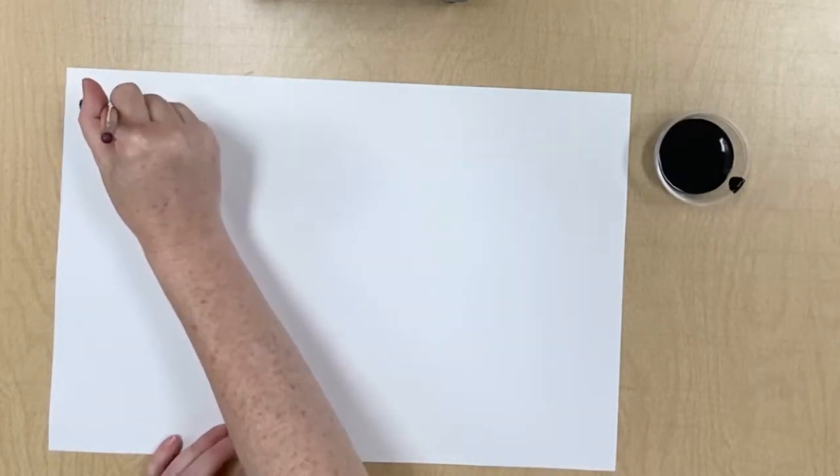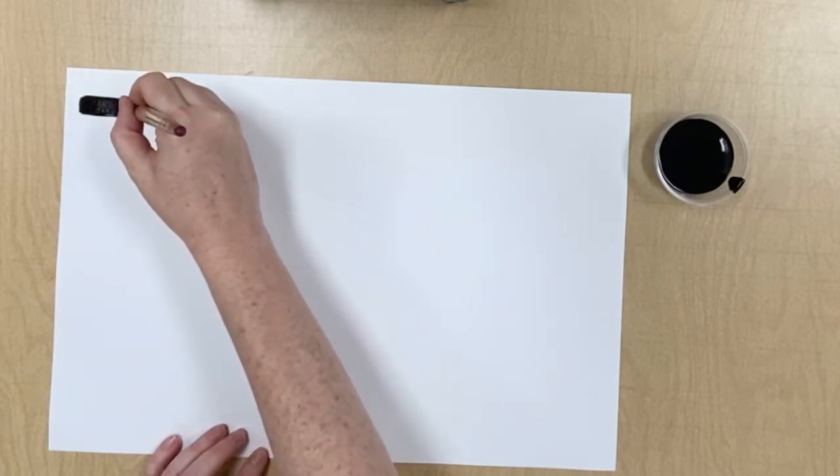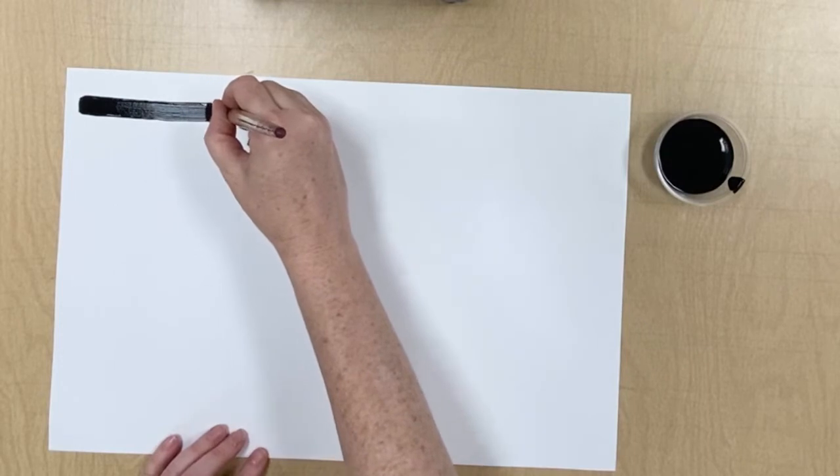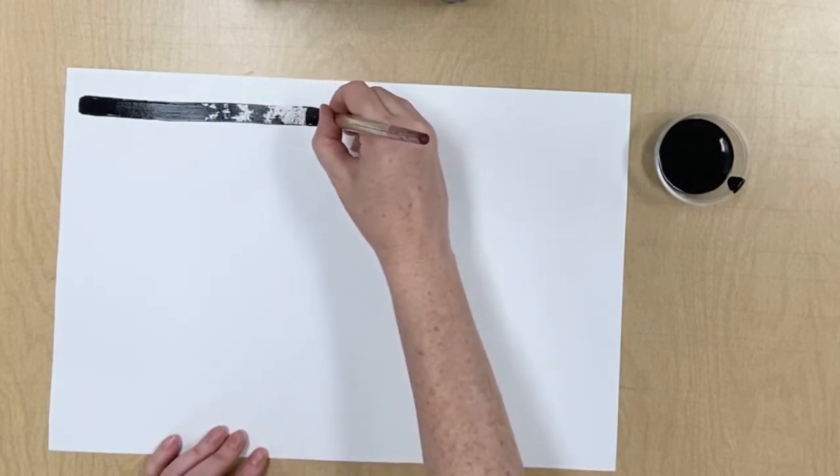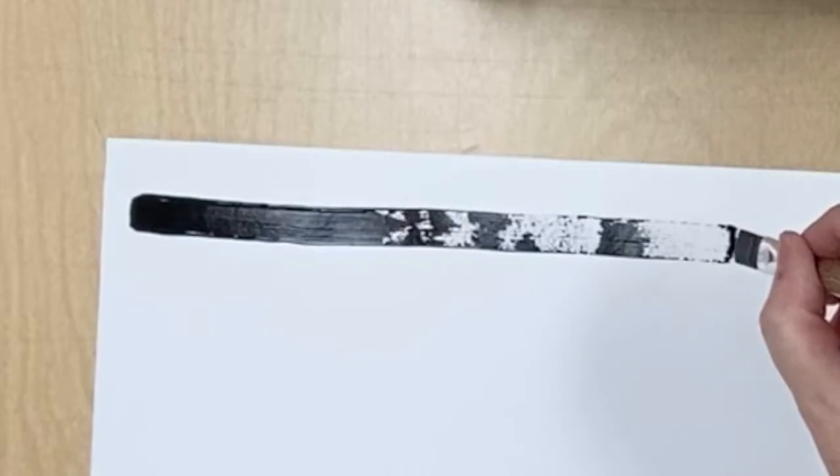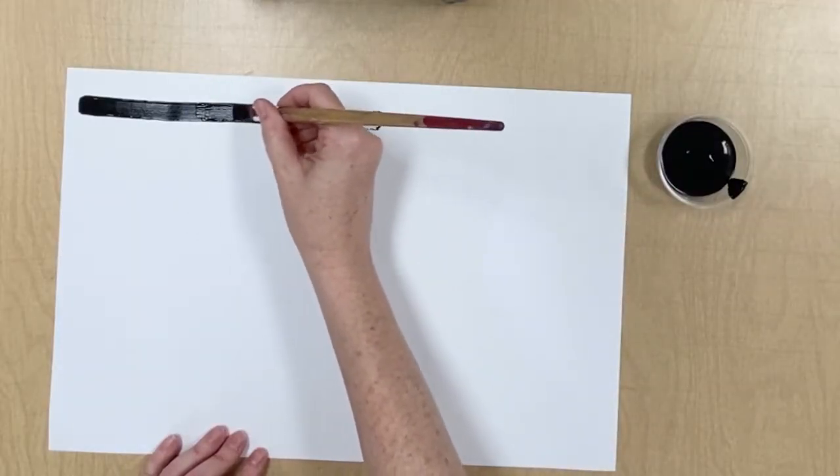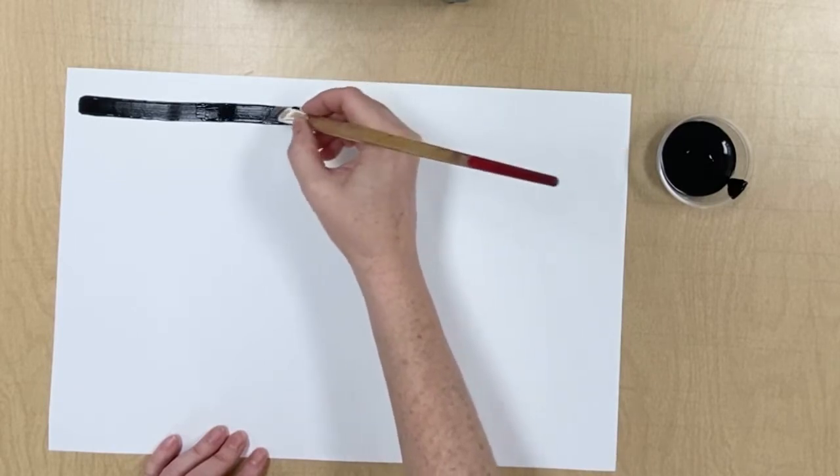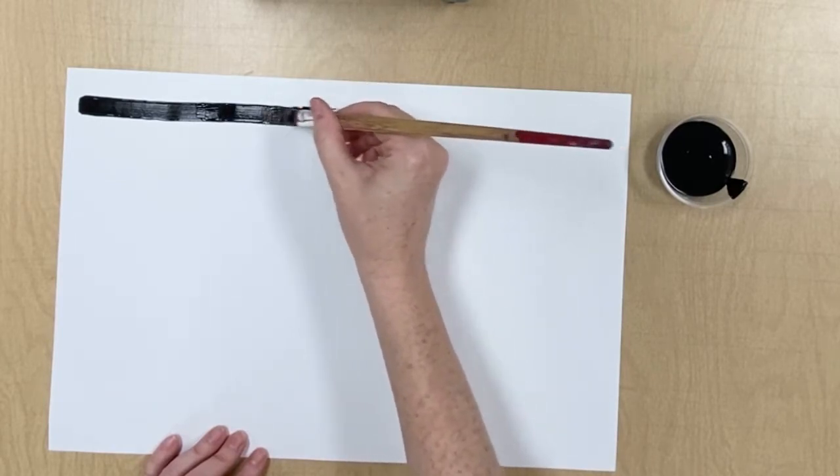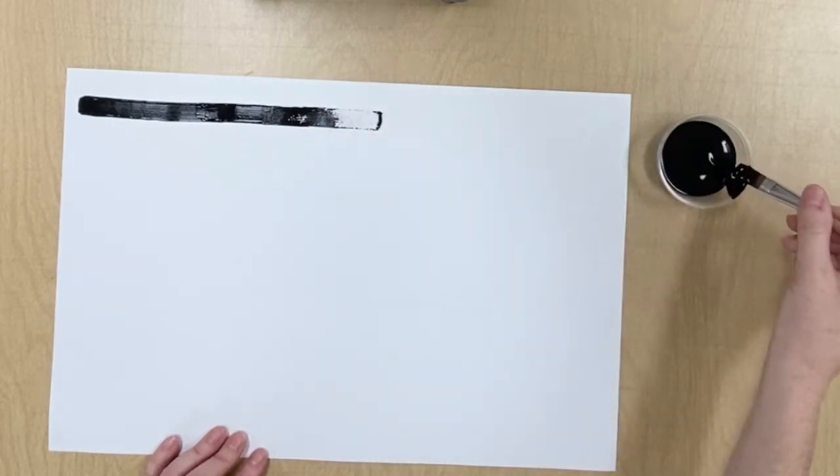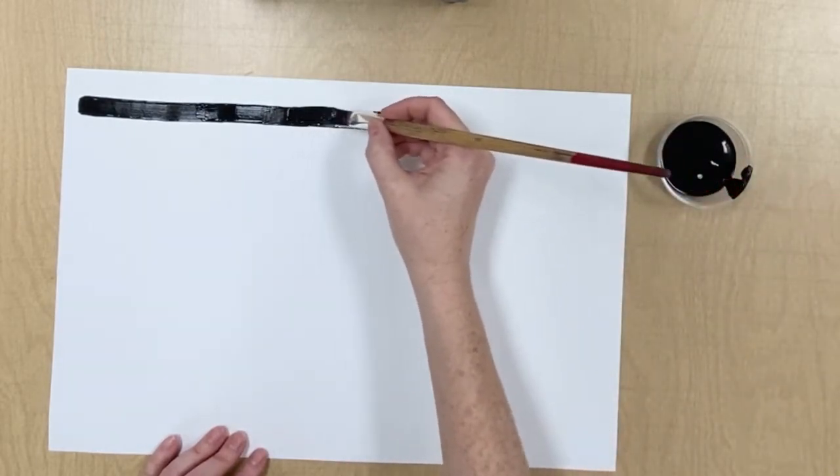Once you have your cup of paint dip your bristles into the paint and wipe any extra on the side of the cup. We're going to start by painting a straight line at the top of our paper. You'll notice the paint runs out pretty quickly. So you'll have to reload your brush and keep going. Sometimes I'll turn my brush over to the other side because there'll be paint on both sides of the brush.